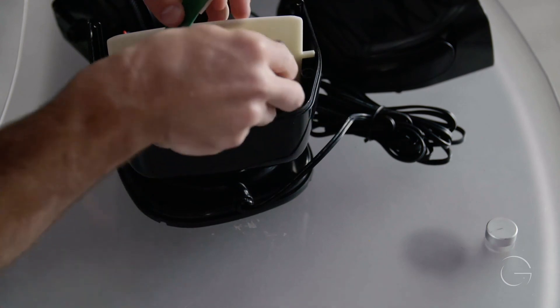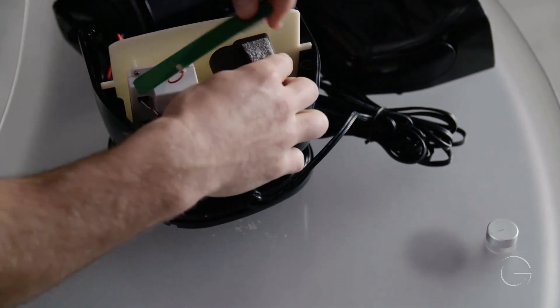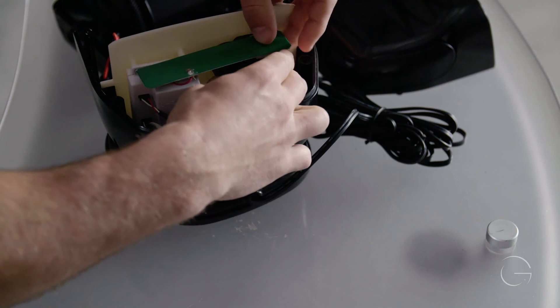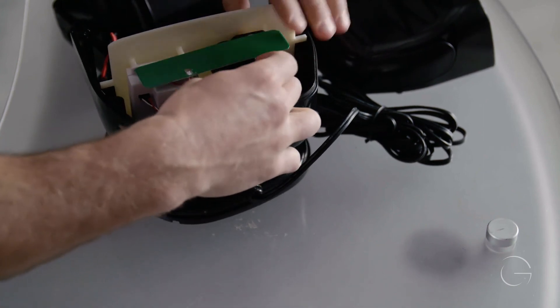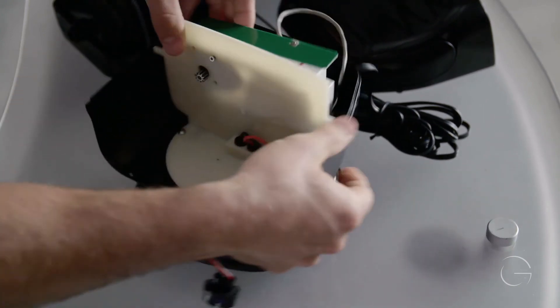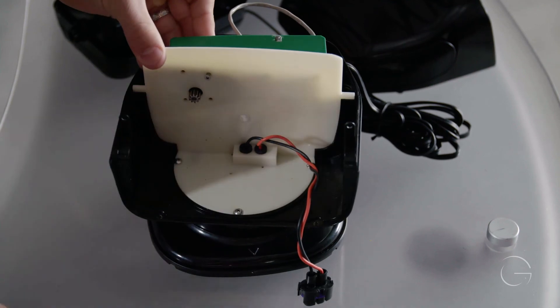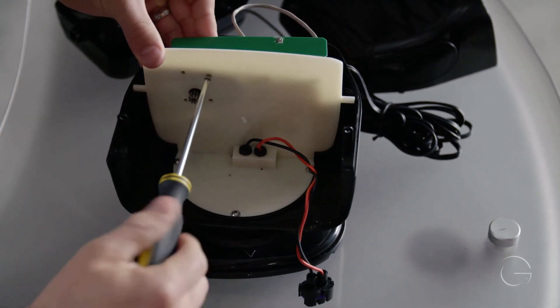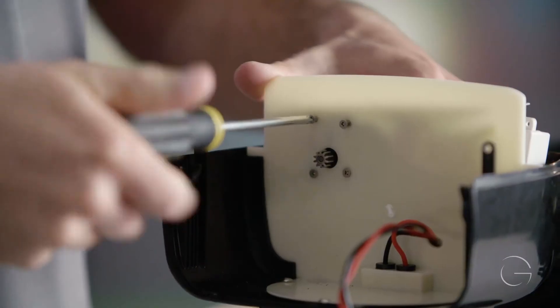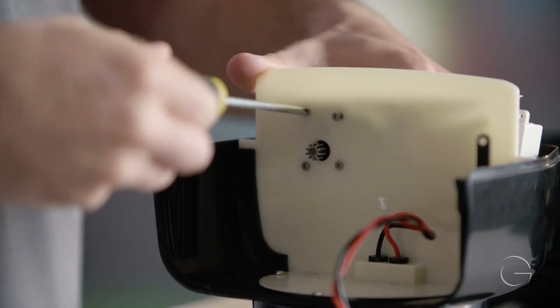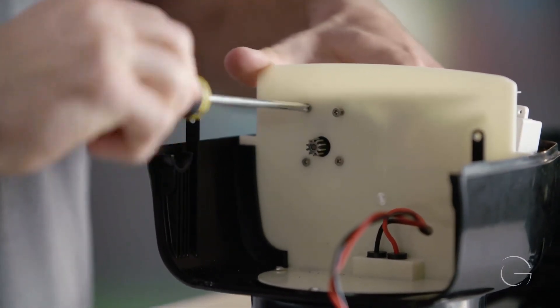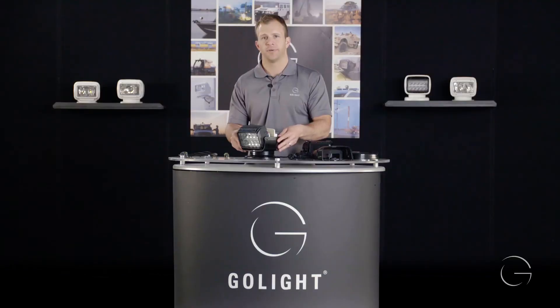Place the motor back into the position on the bulkhead. Put that antenna back on top and then take the four screws and secure the motor back to the bulkhead of the light. Please refer back to the Go Light Radio Ray reassembly video.